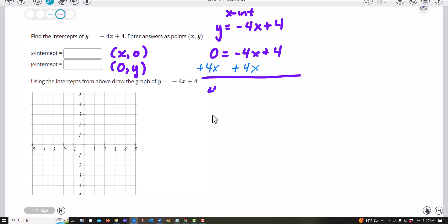So I get 4x equals 4, and now I can divide by this 4 and I get x equals 1. So this would be 1, 0.